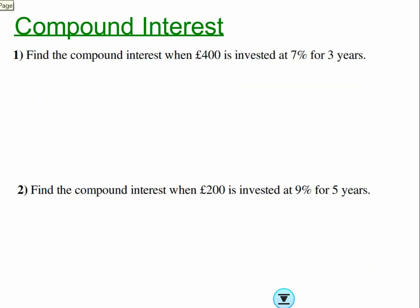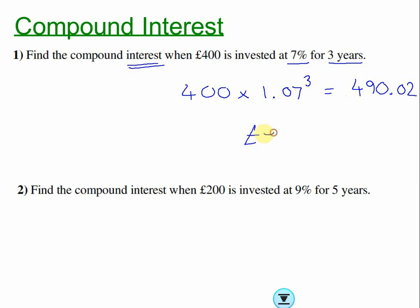Let's look at some practice questions. Find the compound interest — that's the interest, not the final total — when £400 is invested at seven percent for three years. So it's 400 times the percentage multiplier 1.07, raised to the power of three. That gives £490.02, so the interest earned is £90.02. Note: the calculator gave more decimal places but we round to two because it's money.